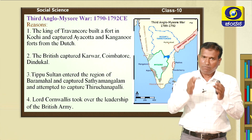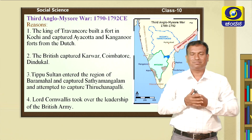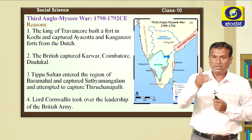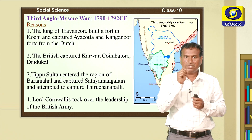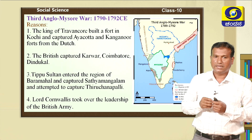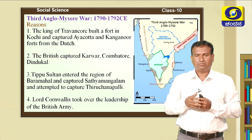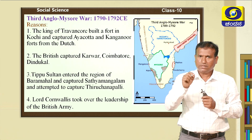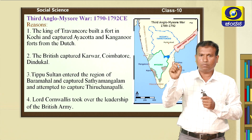The Treaty of Mangalur was responsible for yet another Anglo-Mysore War. The most important reason for the Third Anglo-Mysore War was the politics of Travancore.